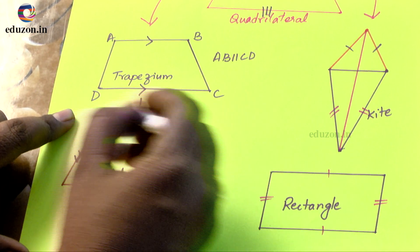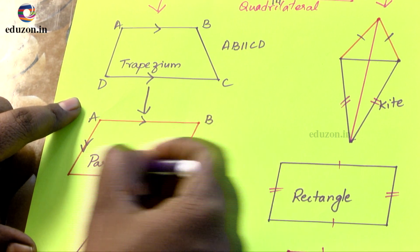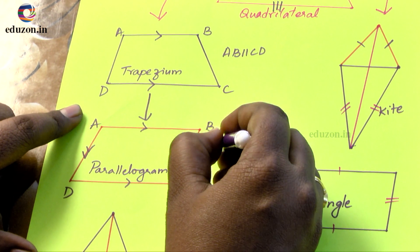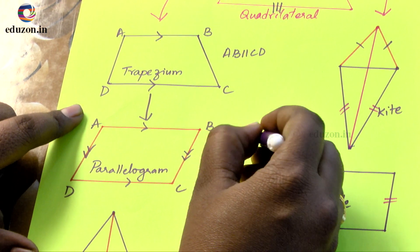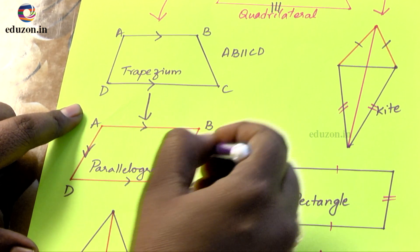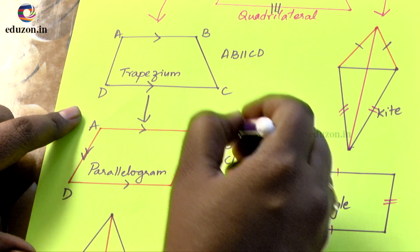Now these two, that is if I name it as again A, B, C, D, already we have AB parallel to CD, and also the other side BC is parallel to AD.